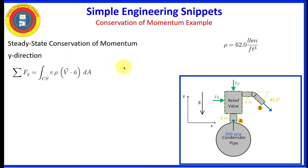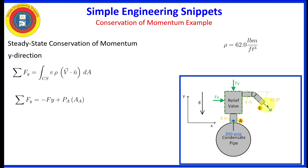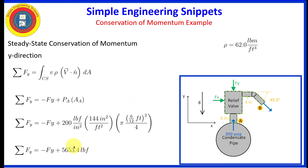Now let's work in the y direction using the same basic equation. Let's determine the external forces in the y direction. Starting with F sub y, which we've assumed to be acting in the minus y direction. At port alpha we have 200 pounds per square inch gauge, and that pressure force is always acting against the control volume, so it's acting in the positive y direction. At bravo we have atmospheric pressure, so that's essentially zero. We can solve for the pressure force contribution and carry that expression as the left-hand side of the Reynolds Transport equation.